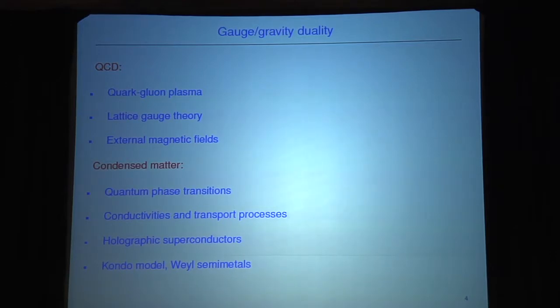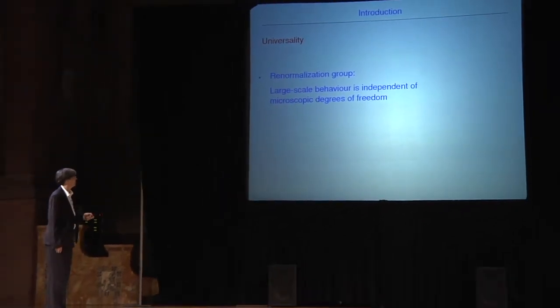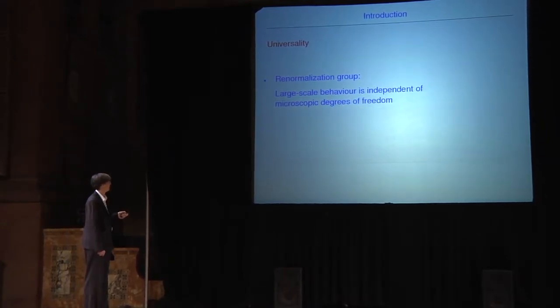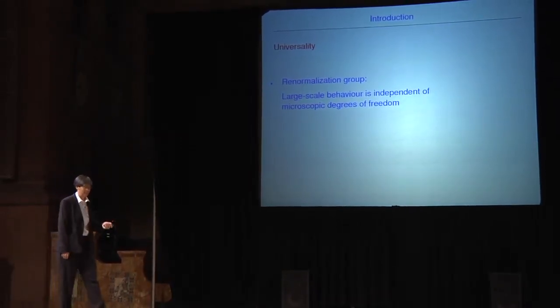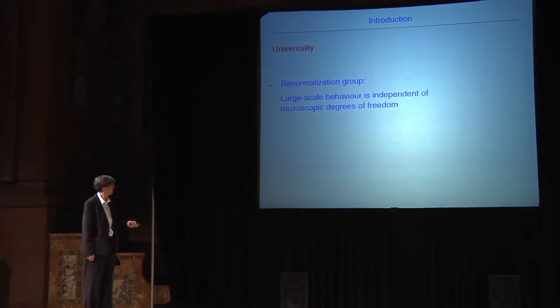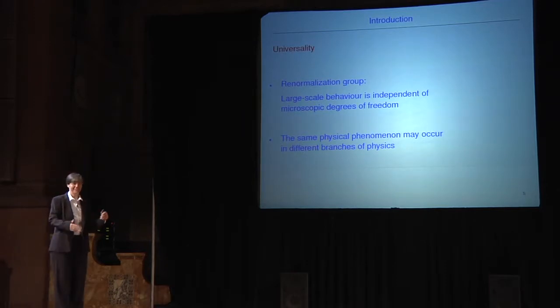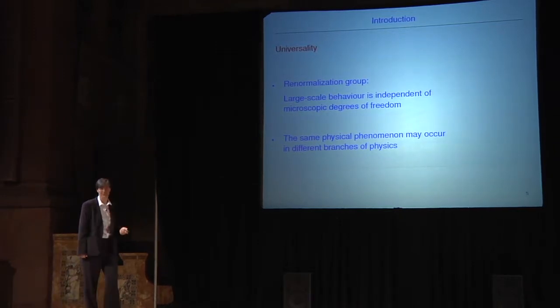Today I will show new examples — one is the Kondo model, the other relates to the so-called Weyl semi-metals. An important unifying concept in all this is universality. This word comes from the theory of the renormalization group, where it means that large-scale behavior is independent of microscopic degrees of freedom. A lesson from applied AdS/CFT is that universality has a much broader meaning: the same physical phenomenon may occur in different branches of physics.